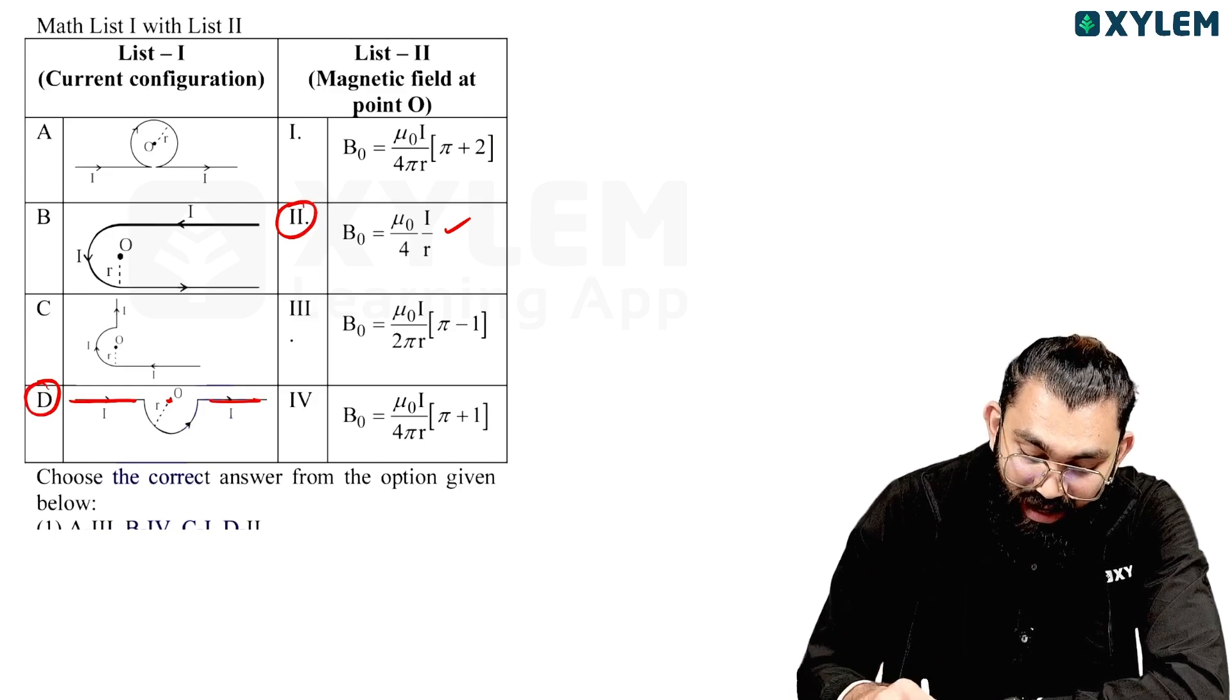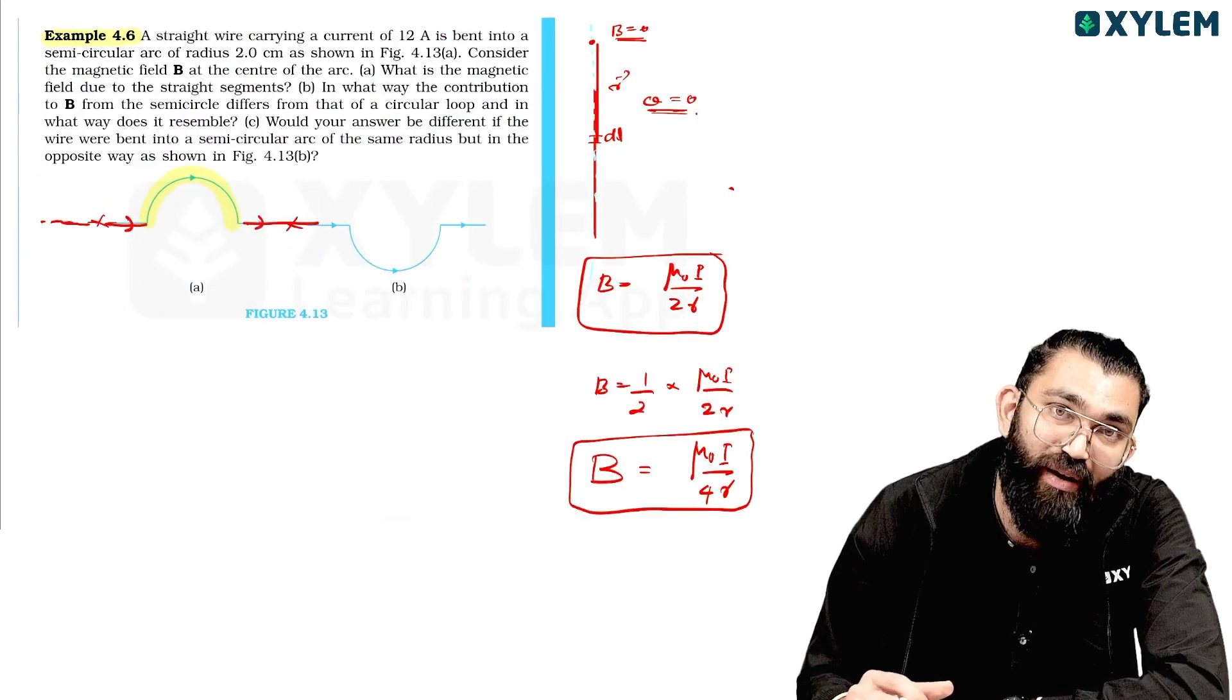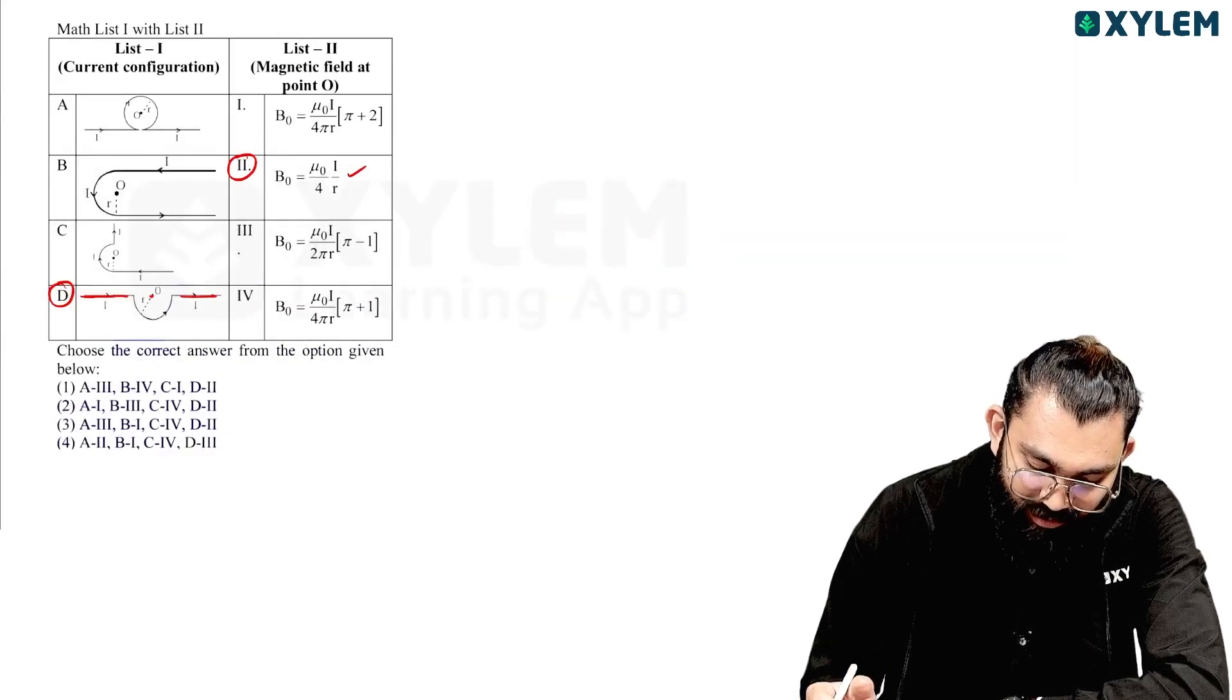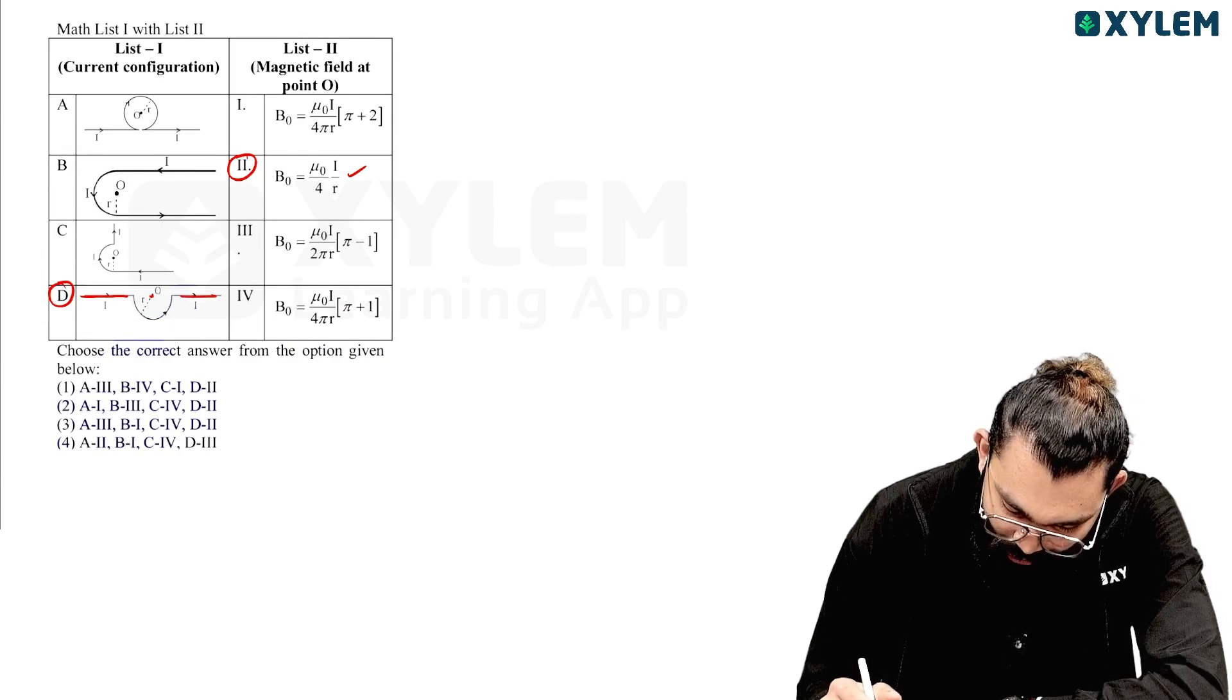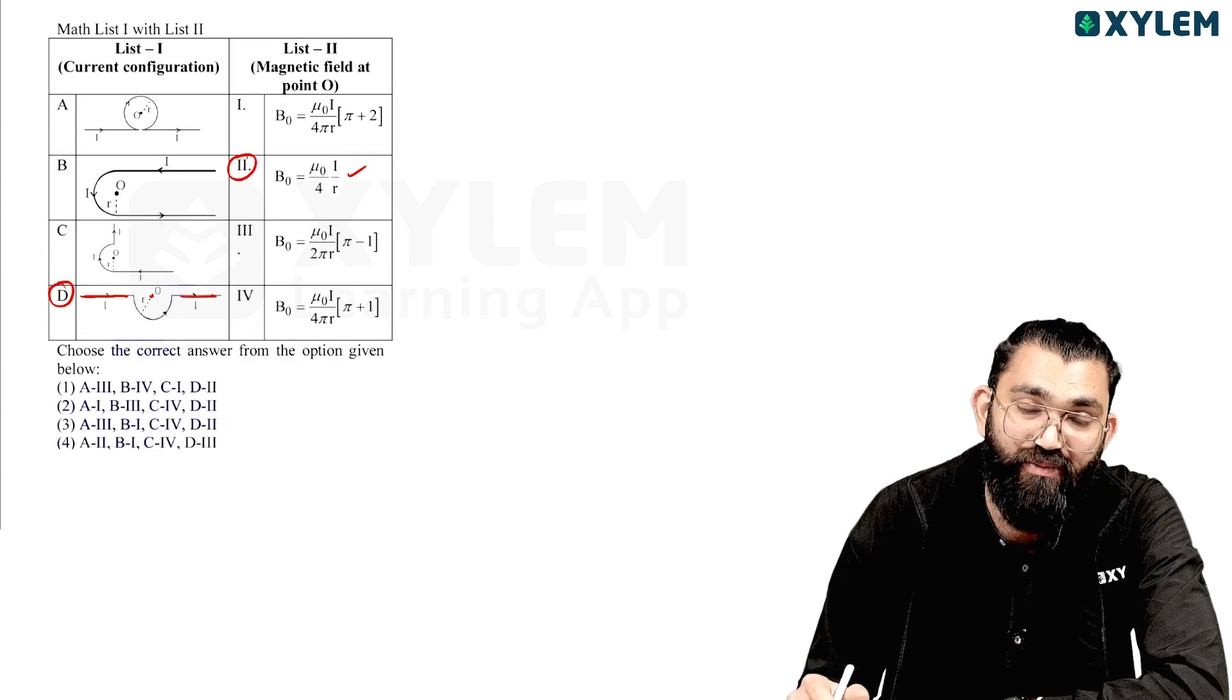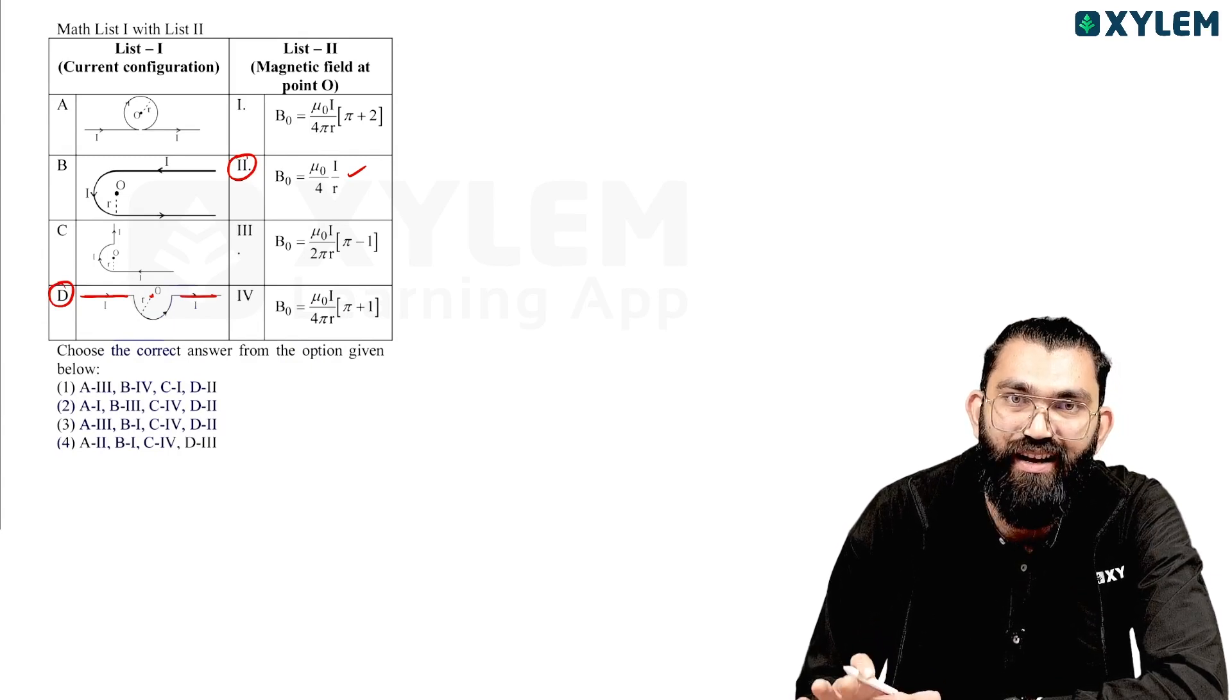Work it out. This is the question frame from NCERT solved example. JEE asks the same. There are three options. Check it out—the correct option is there. This is the task. Check it out, correct option in the comment.